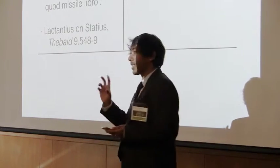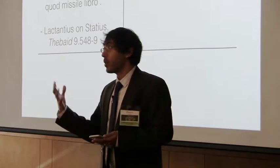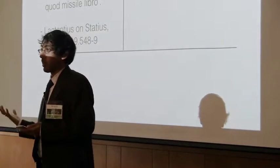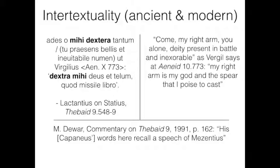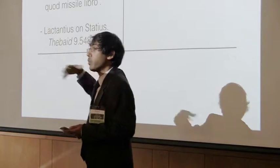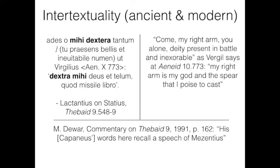That definition of intertextuality to some of you will seem particularly narrow. It's a world of allusion and reference. I wanted to give you some examples of the narrower kind, because that's where the computational tools that we've developed are most instructive and helpful. So we here have a very simple case of an ancient critic, Lactantius. That's probably not his name. We don't know when he lived. His commentary is on an ancient epic poem written in the first century AD, Statius's Thebaid.